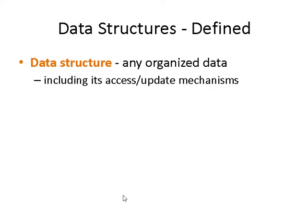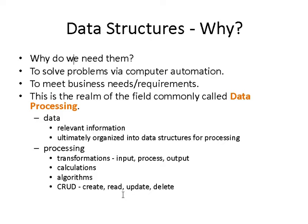Carrying this over into data structures. First, let's define what a data structure is. It's a very general, broad term: any organized data, and it includes its access and update mechanisms. The first question is why? Why do we need them? To solve problems via computer automation, to meet the business needs and requirements. This field is commonly called data processing, which involves data and processing. Data is the relevant information, and it ultimately has to be organized into data structures for processing.